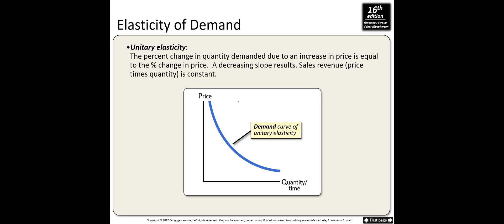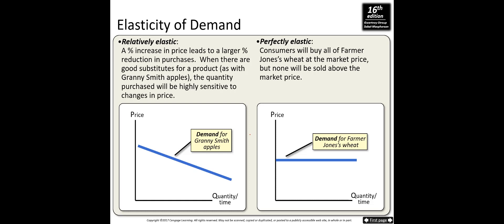For unitary elastic demand, the percentage change in quantity demanded equals the percentage change in price, and sales revenue (price times quantity) remains constant. For relatively elastic demand, the curve looks flat like a sleeping letter I. If you increase price from 100 to 200, quantity demanded drops by a large amount — consumers are very price sensitive, and quantity changes more than the change in price.